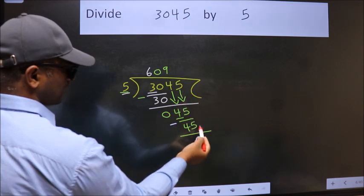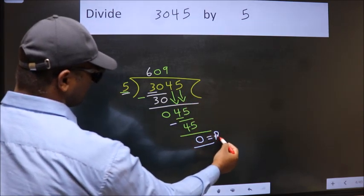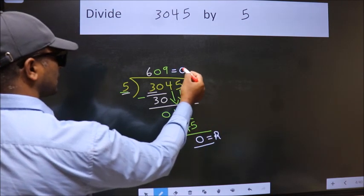No more numbers to bring it down. So we stop here. This is our remainder. This is our quotient.